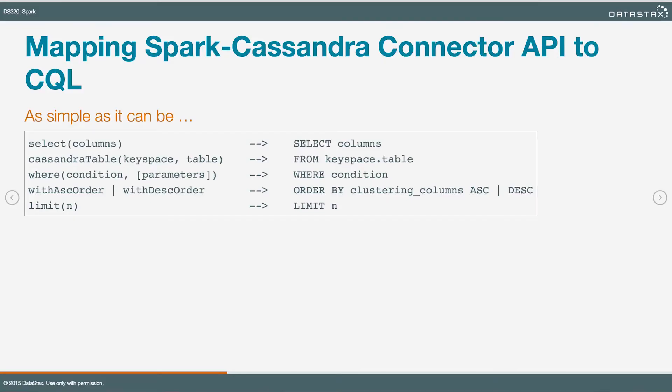Let's take one more look at how these pieces map together. On the right, you'll see a CQL query — select columns from keyspace table, where condition, order by, limit, and so forth. On the left, you'll see the components of the Spark API that correspond to those. The order in CQL goes in a certain way: you start with select. In the Spark API, we start by calling cassandraTable and then chain the select call on top of that. If you know CQL, it's a pretty easy API to pick up.